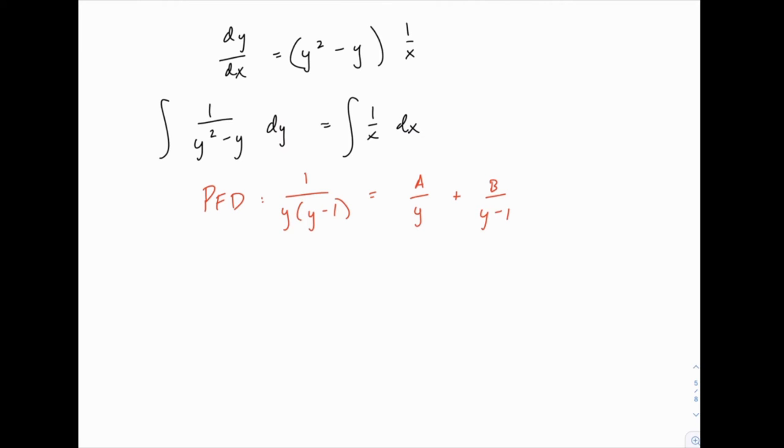To do that we always multiply both sides by this full denominator. Of course on the left side that just leaves us with 1, and then on the right side we'll have A times (y minus 1), because here the y's will cancel, and then we have B times y, because here the (y minus 1) will cancel.